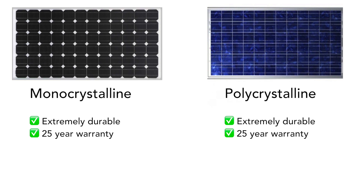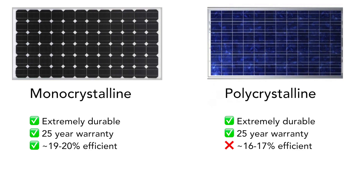Now let's talk about the efficiency and size of each of these panels. Monocrystalline panels are made with a higher grade of silicone, so generally they are slightly more efficient than polycrystalline panels. When I'm talking about efficiency, I mean the percentage of energy that is converted into electricity. On the high end, monocrystalline panels are about 20% efficient, and polycrystalline panels are about 17%. Because monocrystalline panels are slightly more efficient, their footprint is just slightly smaller. So a 150 watt monocrystalline panel will be slightly smaller in dimensions than a 150 watt polycrystalline panel.